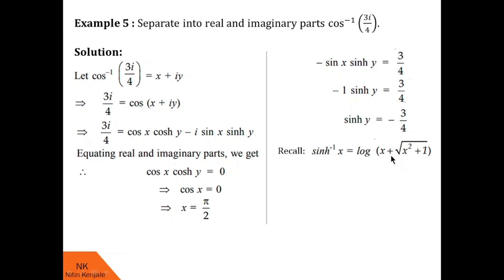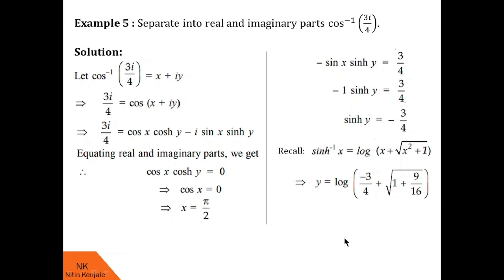Using that formula, sinh⁻¹(−3/4) = log(−3/4 + √((9/16) + 1)) = log(−3/4 + √(1 + 9/16)). So the real part of cos⁻¹(3i/4) is x = π/2, and the imaginary part is y = log(−3/4 + √(1 + 9/16)). I hope you understood this separation of real and imaginary parts of this complex number.